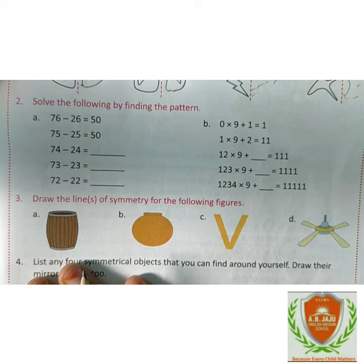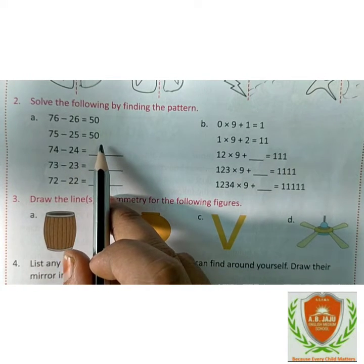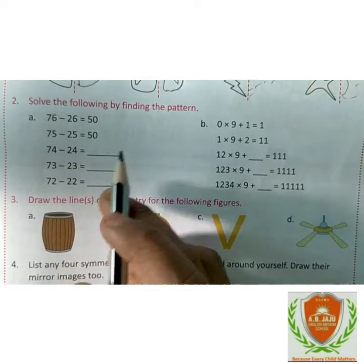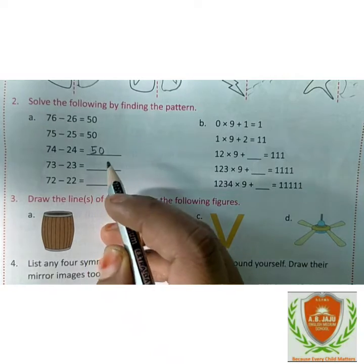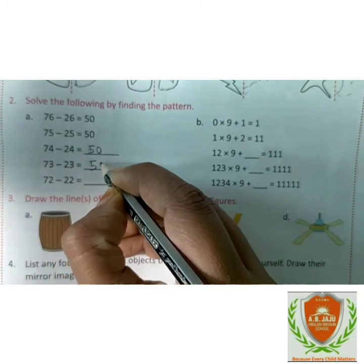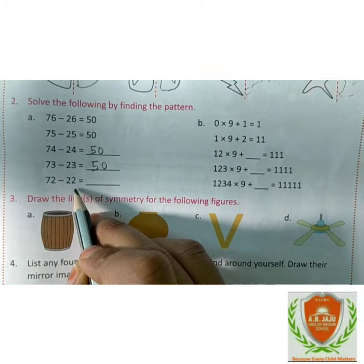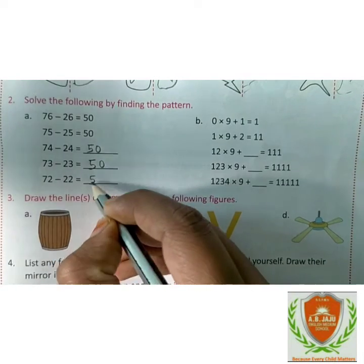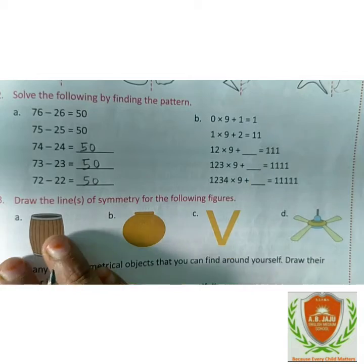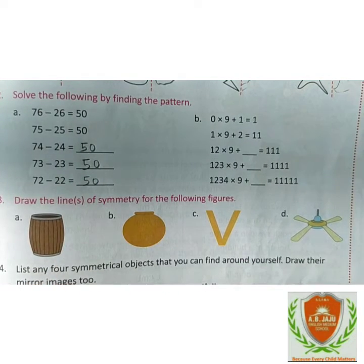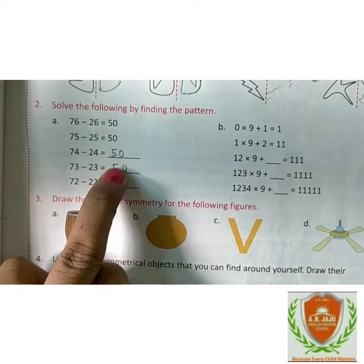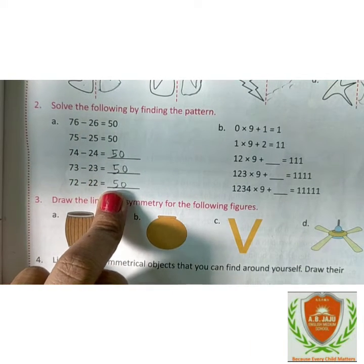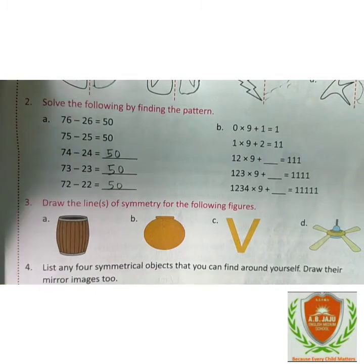The pattern is: 76 minus 26 equals 50, then 75 minus 25 equals 50, then 74 minus 24 — yes, very good — equals 50, then 73 minus 23 equals 50, and 72 minus 22 equals 50. So what is the pattern here? The minuend and subtrahend both decrease by 1, but the difference remains the same: 50.